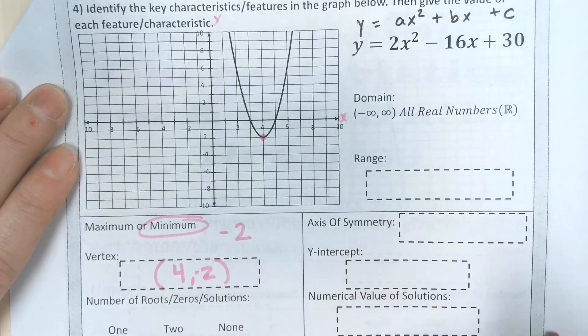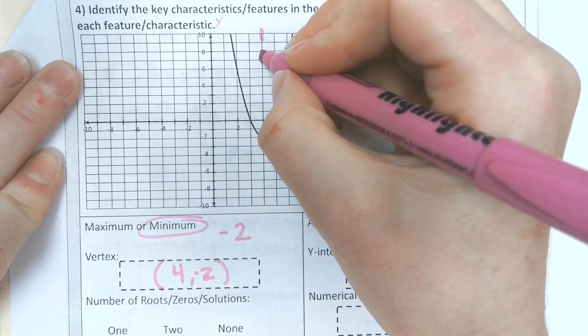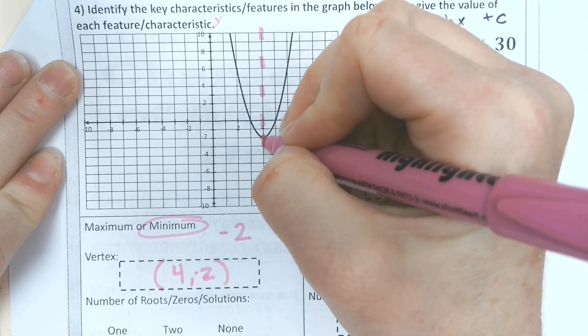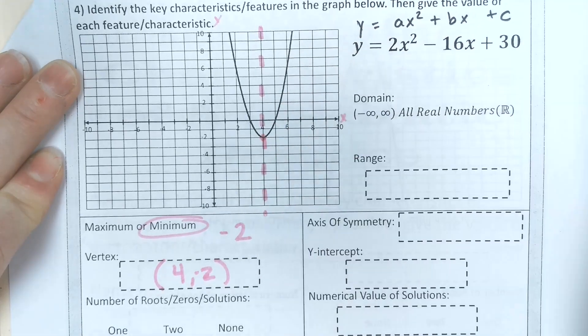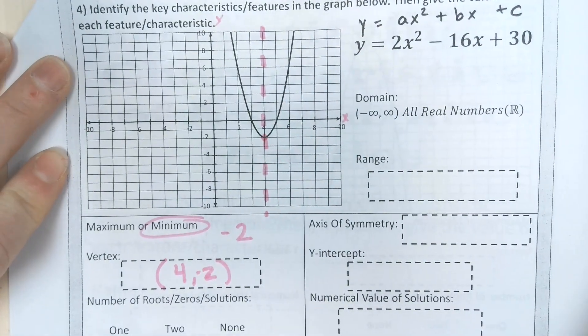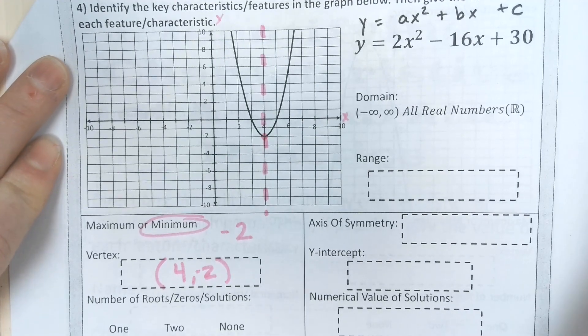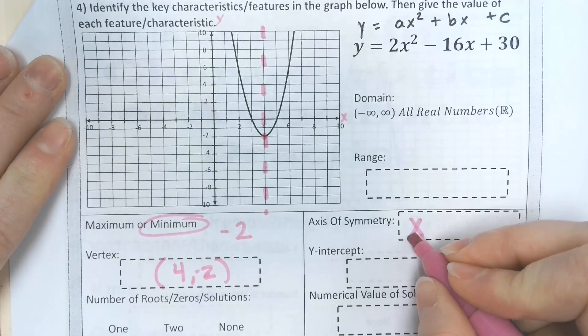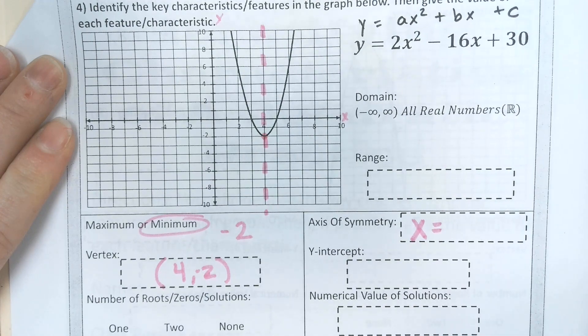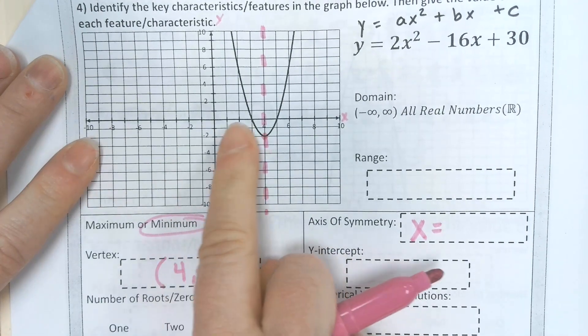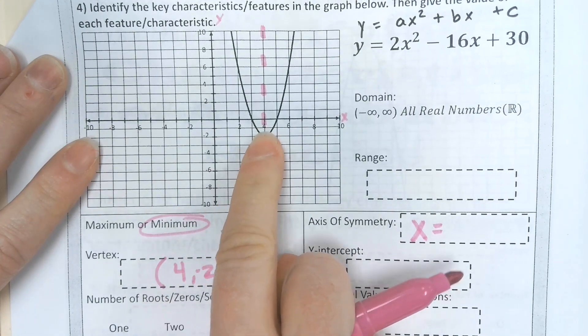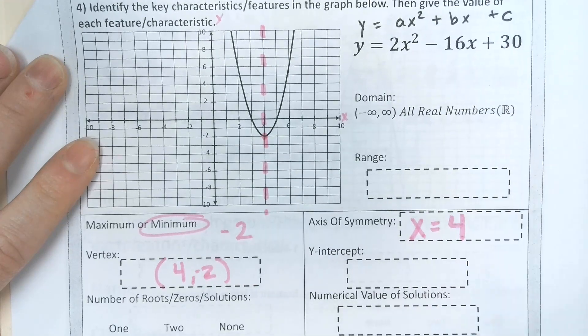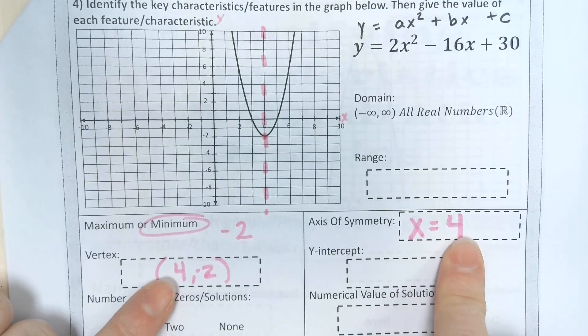The axis of symmetry, that's that dotted line. Go ahead and draw your dotted line down the middle which goes through your vertex. When you write your axis of symmetry, you write it as x equals the x value that it goes through. In this case it's 4, which is the x value of your vertex.